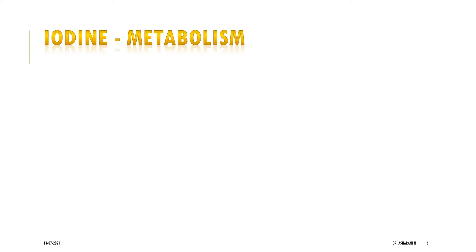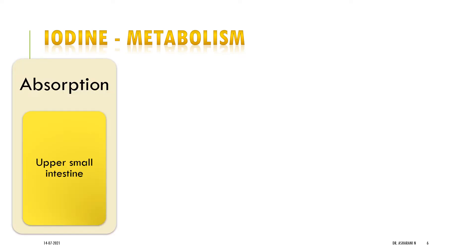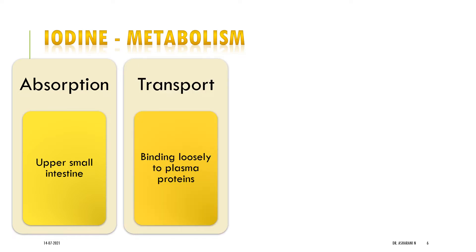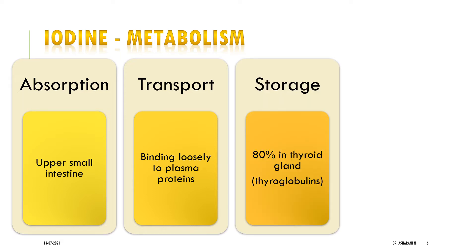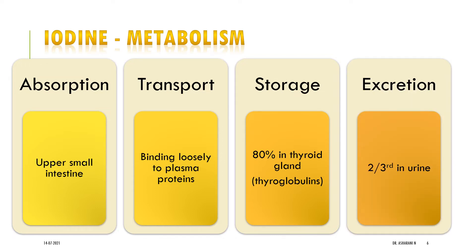Coming to the metabolism, iodine is absorbed from the small intestine, bound loosely to plasma proteins, and transported. 80% of this iodine is concentrated in the thyroid gland, mainly in thyroglobulins, and two-thirds of it is excreted in urine. Even though all cells can take up iodine, the thyroid gland is the only organ which can concentrate and put iodine to a higher valency state.